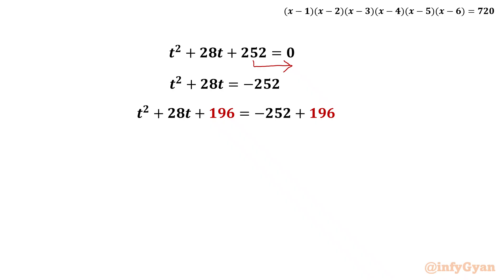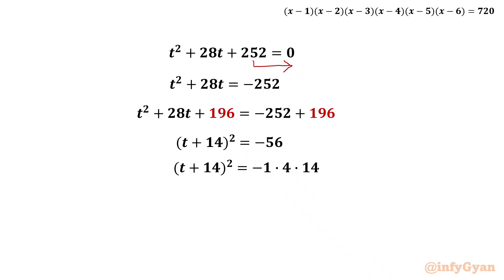The left-hand side becomes (t + 14)², and the right-hand side is −252 + 196 = −56. Since the right-hand side is negative, we will get complex solutions for sure. We factor −56 as −1 × 4 × 14, then take the square root of both sides.